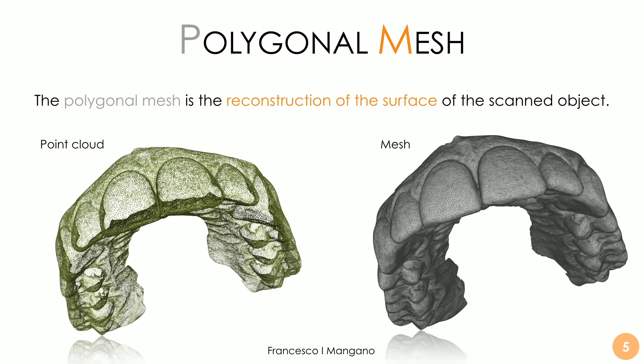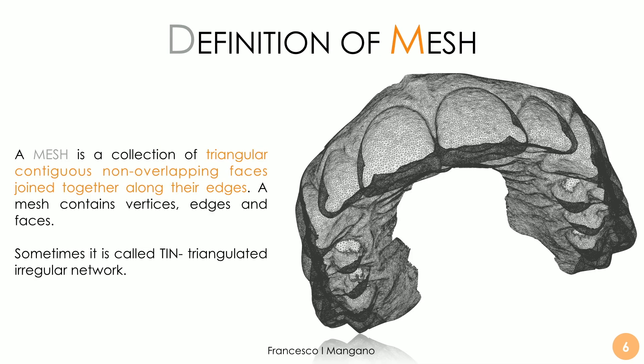The polygonal mesh is the reconstruction of the surface of the scanned object. Among polygons, triangles are used to transform the point cloud into the surface reconstruction. So the definition of a mesh is: a collection of triangular, contiguous, non-overlapping faces joined together along their edges.